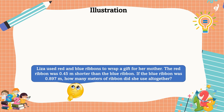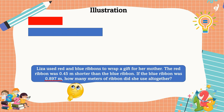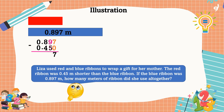It is said that Lisa used red and blue ribbons to wrap a gift for her mother. The red ribbon was 0.45 meter shorter than the blue ribbon, and the blue ribbon was 0.897 meter. To find the length of the red ribbon, we subtract: 0.897 minus 0.450. We add a zero to the empty place value. Then: 7 minus 0 is 7, 9 minus 5 is 4, 8 minus 4 is 4. Copy the decimal point and the leading zero.